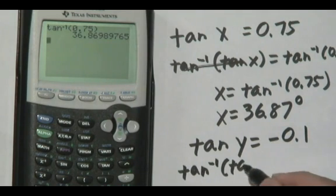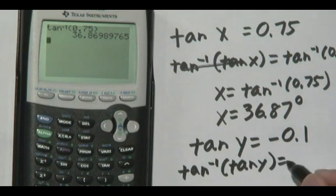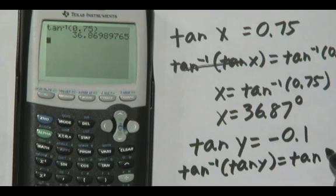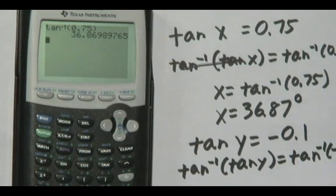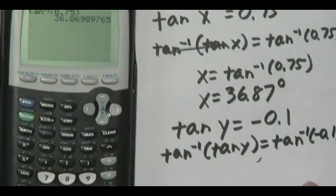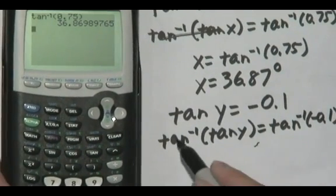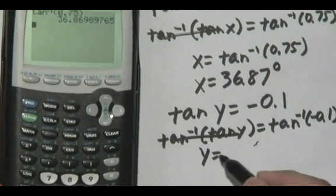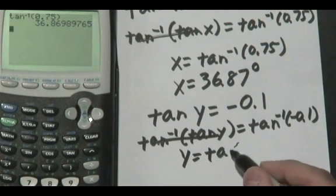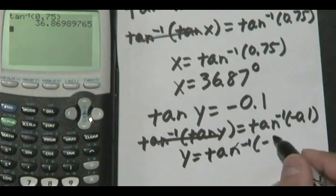Apply the tangent inverse on both sides and we're going to do the same exercise as before. The tangent inverse and the tan will cancel each other out. You have y is equal to tan inverse of negative 0.1.